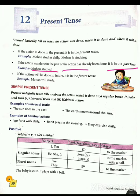For example, Mohan studied — Mohan ne padha. If the action will be done in the future — agar koi action future mein hota hai — it is in future tense. Toh yeh kisme aayega? Future tense mein aayega. For example, Mohan will study — Mohan padhega.